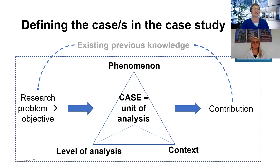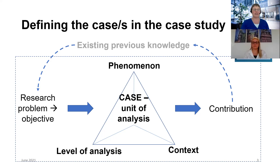The unit of analysis is directly linked with three other major choices: the phenomenon that you investigate, the analysis level at which that phenomenon is investigated, and the context in which the case occurs. It's quite a different story to study a large project as the case and the front-end management practices in it, than to study different front-end processes of large projects as cases in terms of managers' behaviors. In all parts of the triangle there is specific previous knowledge that you as a researcher have to review to spot the research need and justify your choices.